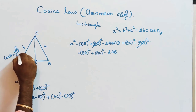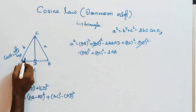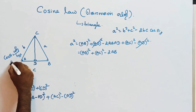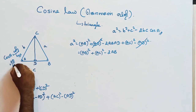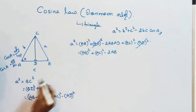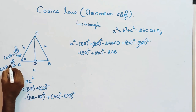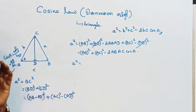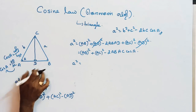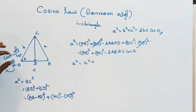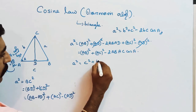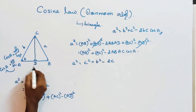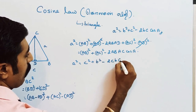In the right triangle CDA, cos(A) = adjacent side / hypotenuse = AD / AC. In Tamil, the hypotenuse is called 'Karna'. So AD = AC · cos(A), meaning AD = b · cos(A). Substituting this into our expression: a² = c² + b² − 2·c·b·cos(A), which gives a² = b² + c² − 2bc·cos(A).